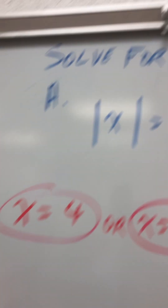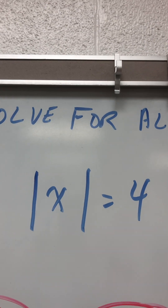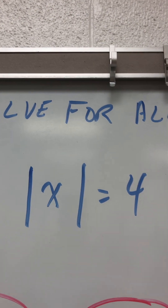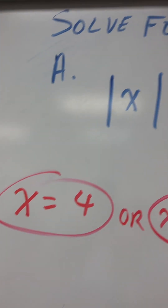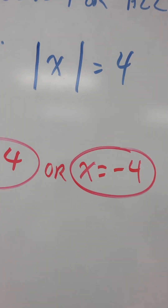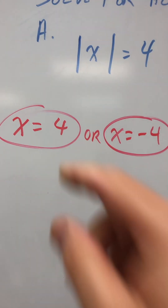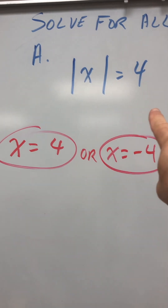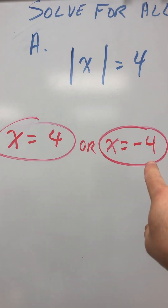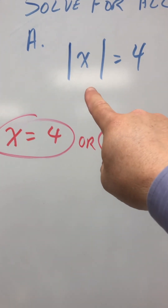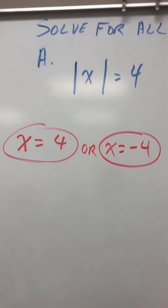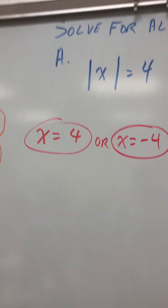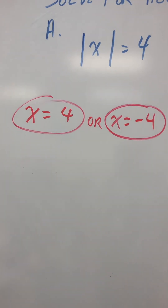For example, if I say absolute value of x equals 4, does it make sense that x could be 4 or negative 4? Because what's the absolute value of positive 4? The answer would be positive 4. What's the absolute value of negative 4? Positive 4, right? So x could be positive 4 or negative 4.